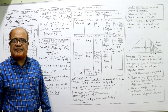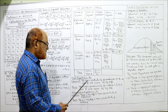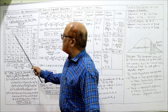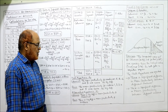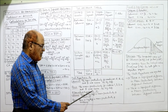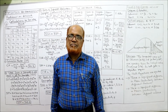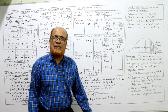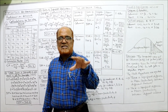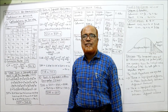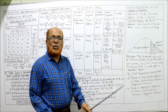Null hypothesis for columns (machines): The mean productivity for machines A, B, C, and D is the same — no significant difference in mean productivity among the different machines. Null hypothesis for rows (workers): The mean productivity for workers 1, 2, 3, 4, and 5 is the same — no significant difference among the workers. Alternative hypothesis: There is a significant difference in mean productivity among the different machines A, B, C, D, and there is a significant difference in mean productivity among the different workers 1, 2, 3, 4, 5.